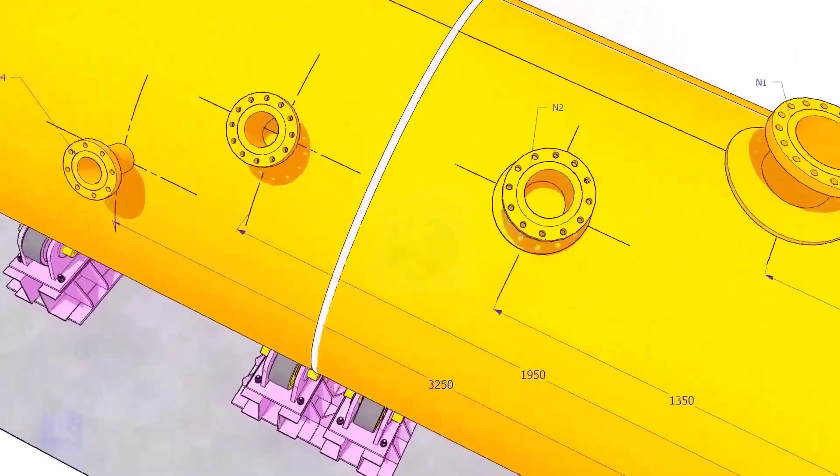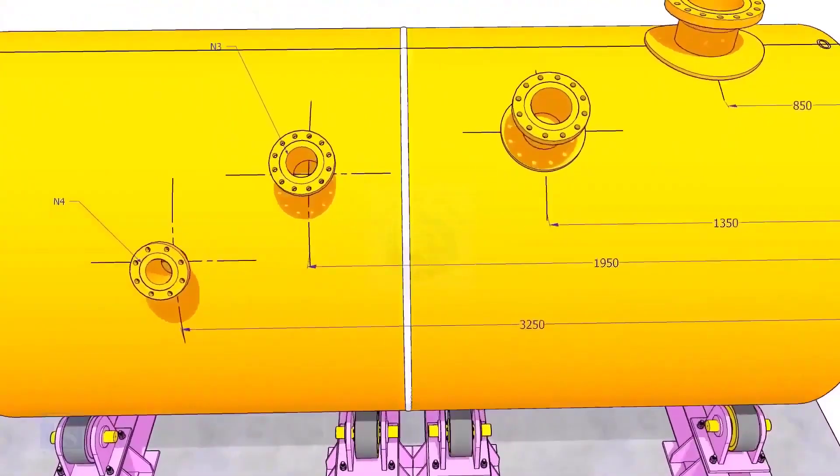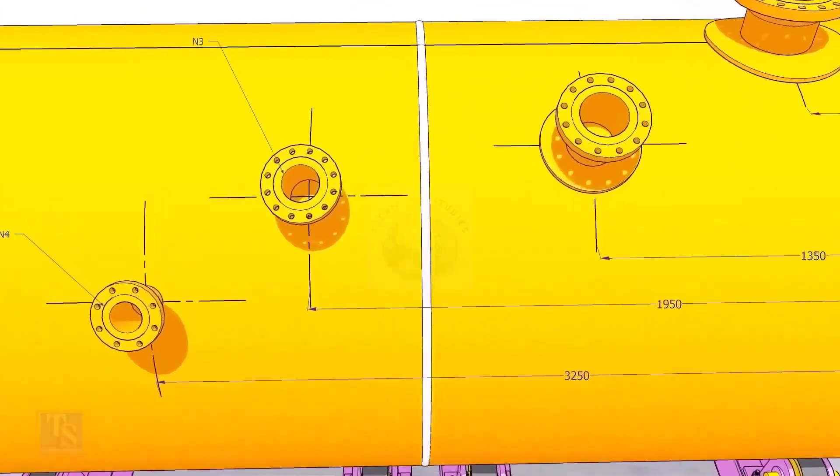Draw an arc of 1350 millimeters from the edge of the shell intersecting this line. This point is the center of the nozzle N2.